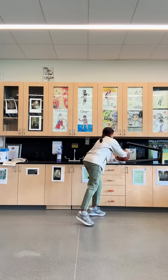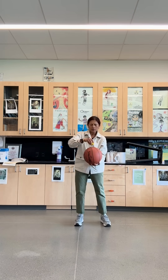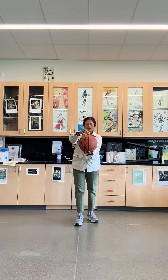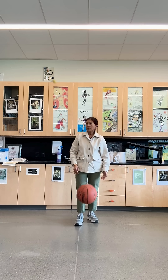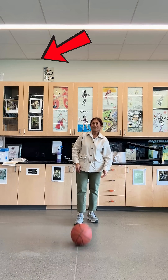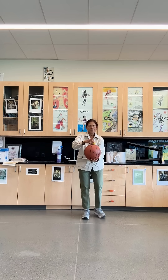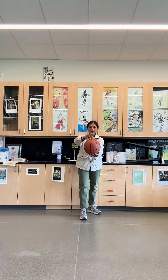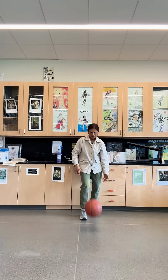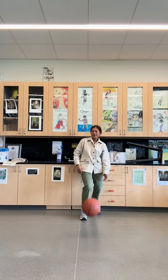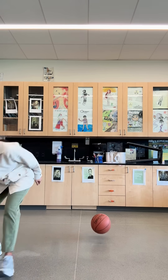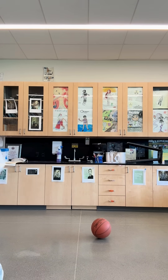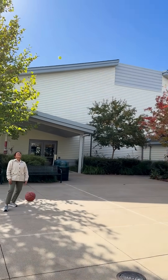Now let's put the clay on top of the basketball and drop them. Upon impact with the ground, the basketball's large upward momentum transfers into the clay, and the clay's small downward momentum transfers into the basketball. This causes the clay to shoot up. In both cases, the basketball does not bounce as much.